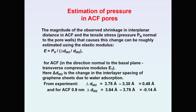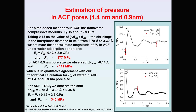The magnitude of the observed shrinkage in interplanar distance in ACF was calculated using the elastic modulus formula, where tensile stress equals the pressure normal to the pore. From experiment, for ACF with pore size 1.14 nm, the strain was 0.48 angstroms. Using the transverse compressive modulus typical for pitch-based mesoporous ACF, we calculated the pressure normal to the pores for ACF with pore size 1.14 nm to be more than 400 MPa.